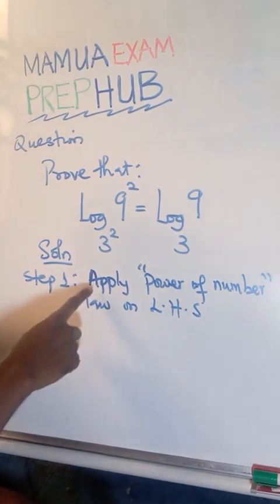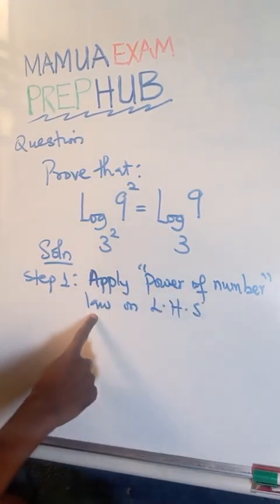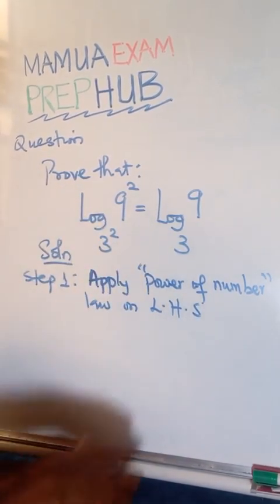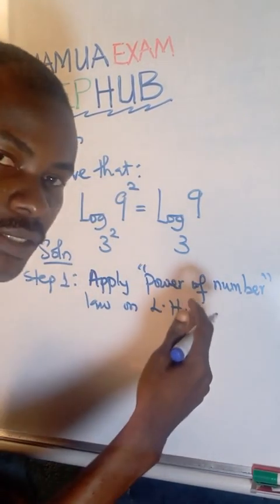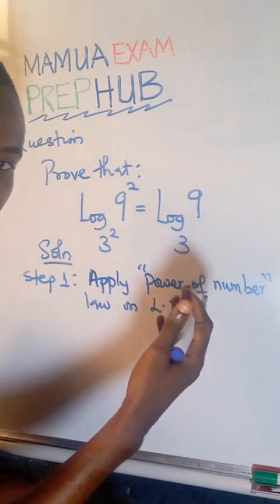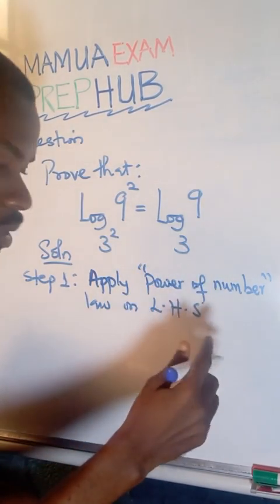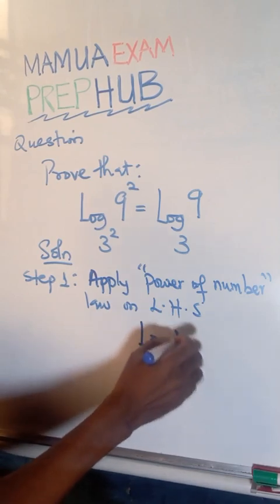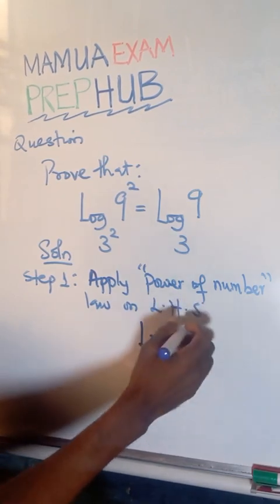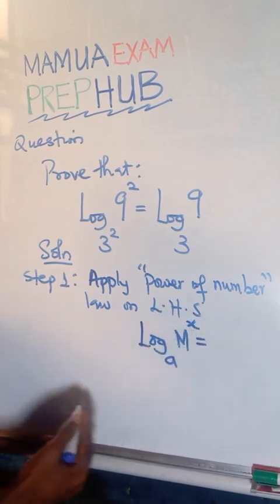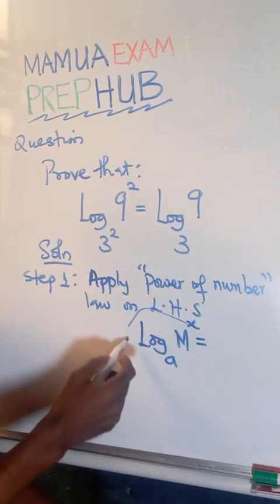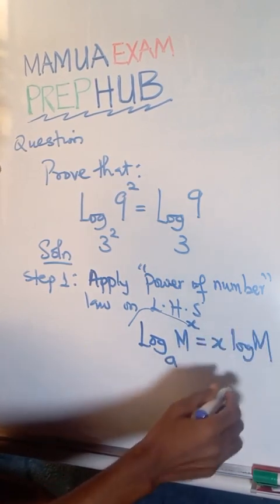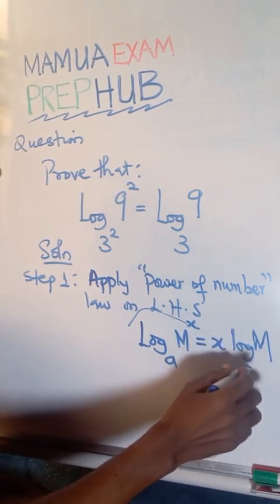So let's go with the first step. We're going to apply the power of numbers law on the left hand side. So let me quickly review what we have as the power of number law. So I have it as, if I have log base a of n raised to the power x, we can simply bring this as a numerator. So it can be x log n base a.